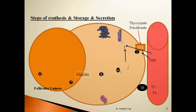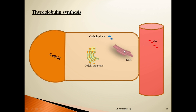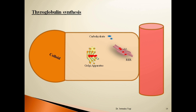The second step of thyroid hormone synthesis is the synthesis and secretion of thyroglobulin. Thyroglobulin synthesis occurs at the rough endoplasmic reticulum of thyroid follicular cells. Here, amino acids with the help of messenger RNA on the rough endoplasmic reticulum form a peptide molecule with a molecular weight of about 30,000. These peptide molecules then form a dimer, bringing the molecular weight to about 60,000. This dimer is then transported to the Golgi apparatus, where it is combined with a carbohydrate molecule.